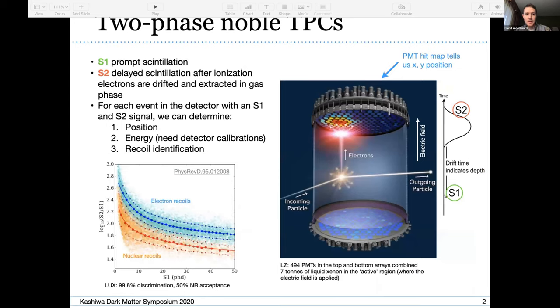So LZ is a two-phase noble TPC. This is a technology that's really leading the way for searches of intermediate and high mass WIMPs, and I wanted to explain a little bit how the TPC works. Again, we've already covered this a little bit in this session, so I won't spend too long on this.